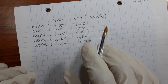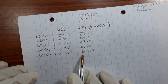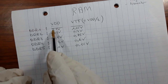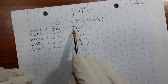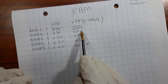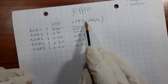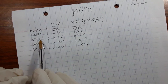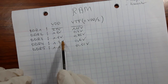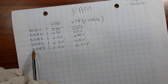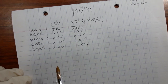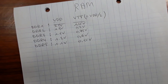There are many kinds of RAM. For DDR1: VDD = 2.5 V, VTT = 1.25 V. For DDR2: VDD = 1.8 V, VTT = 0.9 V. For DDR3: VDD = 1.5 V, VTT = 0.75 V. For DDR4: VDD = 1.2 V, VTT = 0.6 V. For DDR5: VDD = 1.1 V, VTT = 0.55 V. Note that VTT always equals VDD divided by 2.